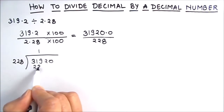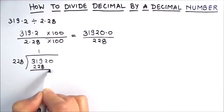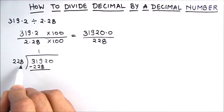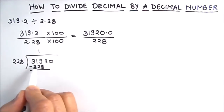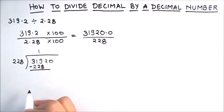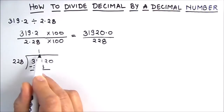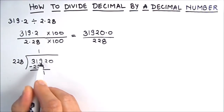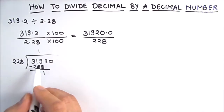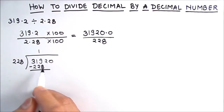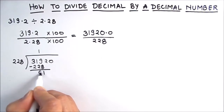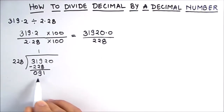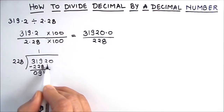228 times 1 is 228. We won't use 2 because 228 times 2 would be over 400, which is more than 319. So 228 times 1 is 228. Subtracting: 9 minus 8 is 1, 11 minus 2 is 9, and 2 minus 2 is 0, giving us 91.